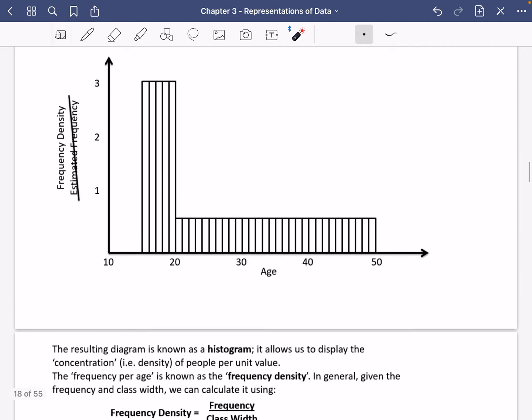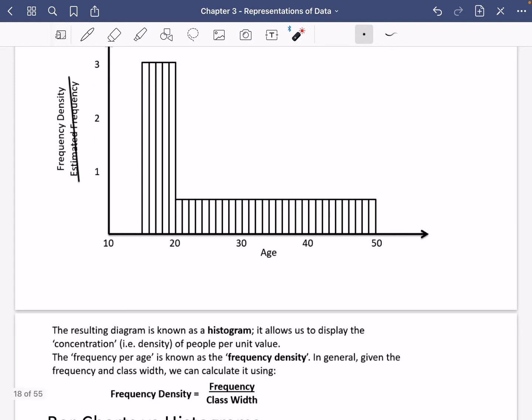So this diagram that we've got here, which obviously wouldn't normally have these additional lines drawn in the middle, is known as a histogram. And it allows us to display the concentration or the density of people per unit value. And by unit value here, I'm talking about the age of someone at this party. So the frequency per age is known as the frequency density. In general, when you're given the frequency in the class width, we can calculate it using the fact that the frequency density is the frequency divided by the class width.